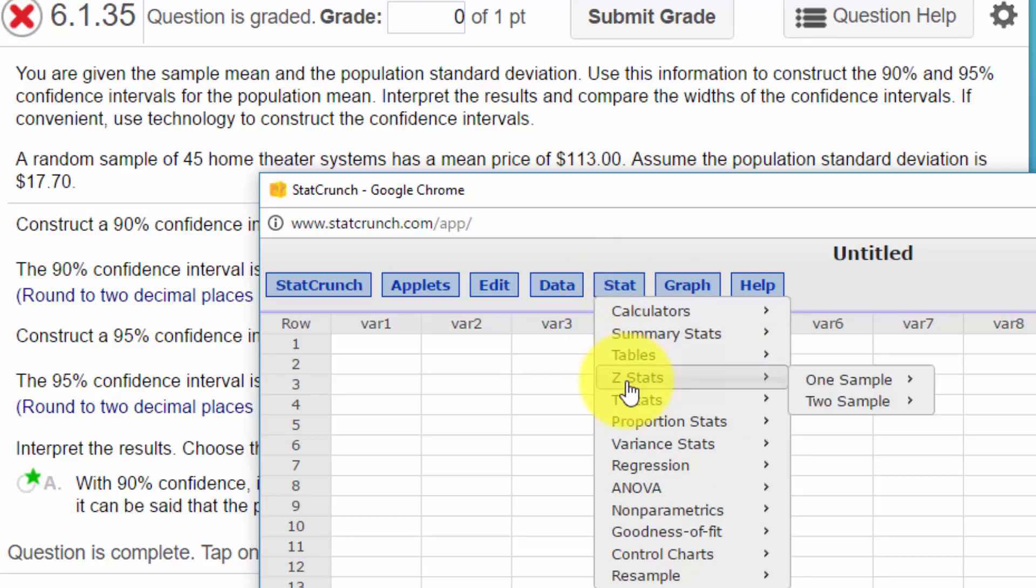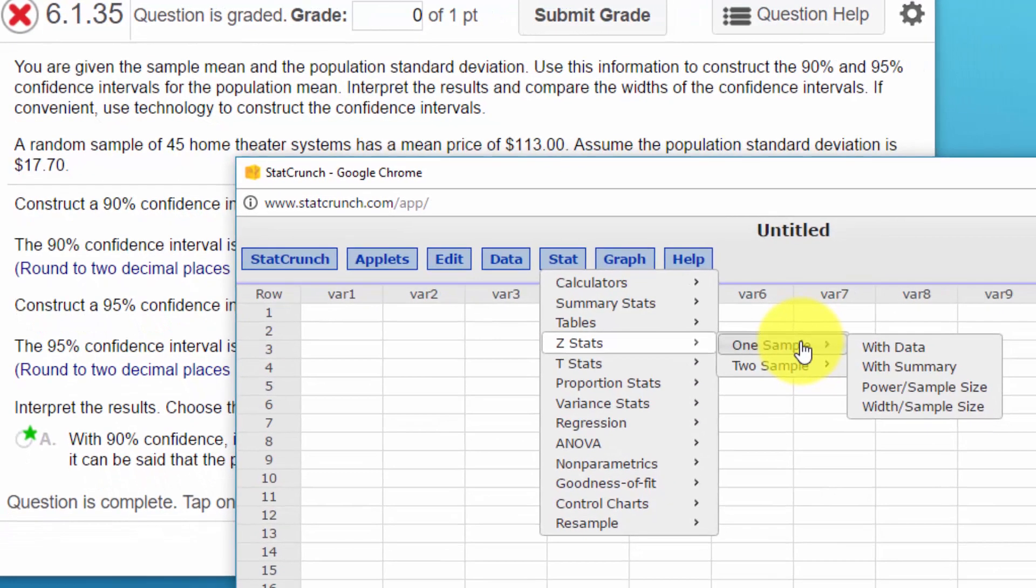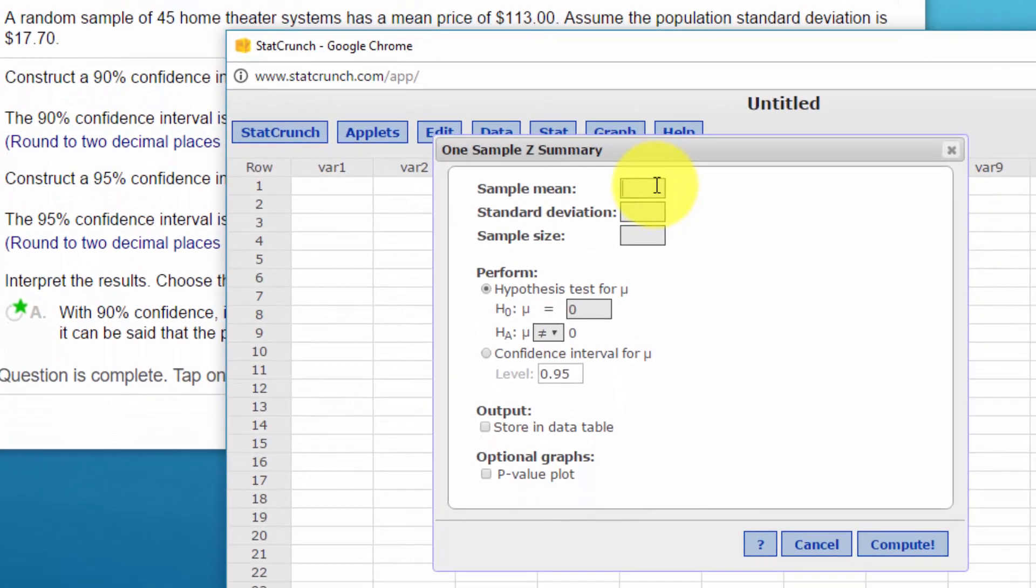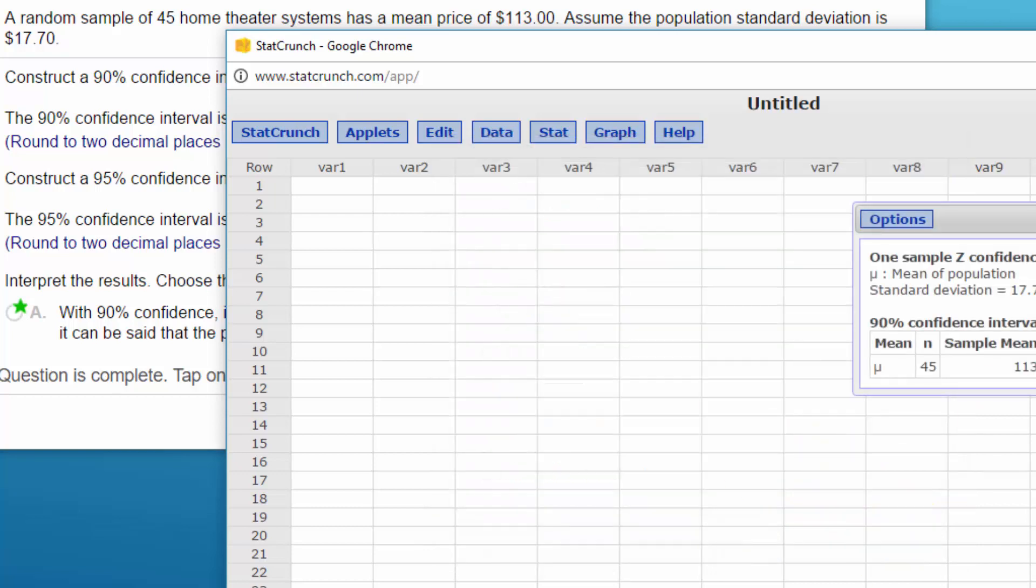To solve this we're going to go to Stat. That's where most of our calculators are. We're going to do z-stats, because we know the standard deviation of the population sigma. This is a one sample with summary. We bring up this dialog. We put in the sample mean of 113. We put in the standard deviation of the population, which is 117.70. We put in the sample size of 45. Down here the key is to select this bubble area that we want the confidence interval for the mean. First we want for 0.90. We just click Compute.